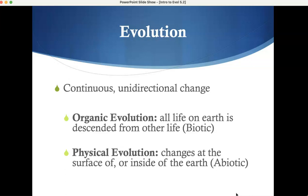Another definition that keeps showing up in the books: continuous unidirectional change — one-directional change. There are two kinds of evolution: micro and macro. But before that, there are also two broader kinds: there's organic evolution and there's physical evolution.